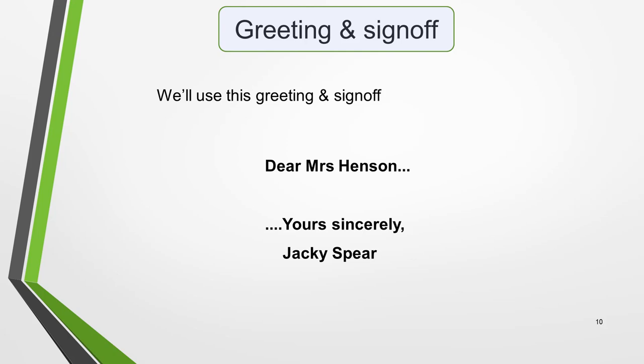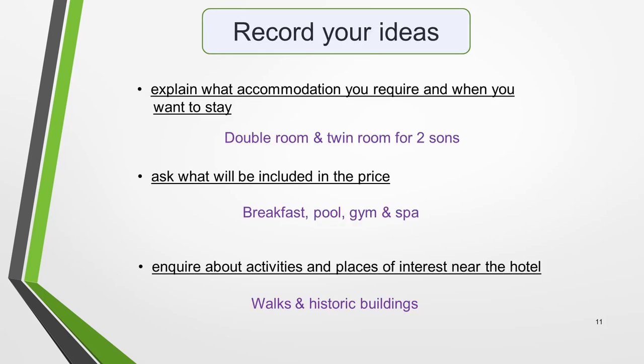We're now ready to think up some ideas to write about. We have the guidelines of the three bullet points to help us, so this won't be difficult. You only have to write 150 words, so you won't need many ideas. But do make sure that you write about each bullet point and develop each idea fully. You don't have to have the best ideas you can possibly think of — go with your first thoughts and don't waste time trying to think up better ideas. However, they must relate directly to the bullet points. Note them beside each bullet point on the exam paper like this.